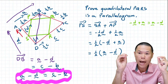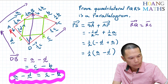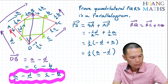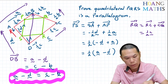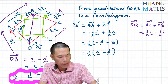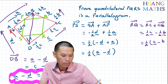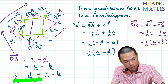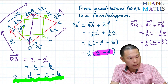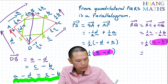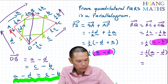Now let's find vector RQ. Vector RQ equals vector RC plus vector CQ. Vector RC is a half of C, and vector CQ is negative a half of vector B. Taking out the common factor of a half, that gives us a half of vector C minus vector B. But we already know that C minus B is exactly the same as I minus D. So therefore, vector RQ equals a half of I minus D, which is equal to vector PS.